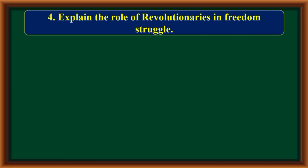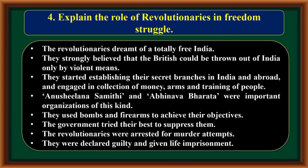Explain the role of revolutionaries in the freedom struggle. The revolutionaries dreamt of a totally free India. They strongly believed that the British could be thrown out of India only by violent means. They established secret branches in India and abroad and engaged in collection of money, arms, and training of people. Anushilan Samiti and Abhinava Bharata were important organizations of this kind. They used bombs and firearms to achieve their objectives. The government tried to suppress them. The revolutionaries were arrested for murder attempts, declared guilty, and given life imprisonment.